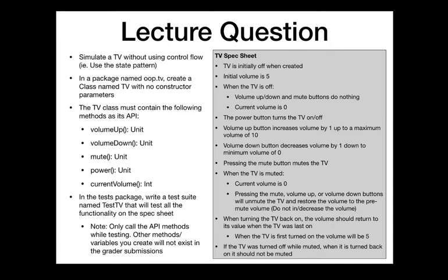A quick overview of the spec sheet: the TV starts off at 'off' with a volume of five. Whenever the TV is off, calling current volume should return zero regardless of the actual volume. When the TV is turned on, the volume is initially five. Volume up and volume down increase and decrease the volume up to a max of ten and a minimum of zero. When you mute, it sets the current volume to zero, but the internal state of the volume has to be remembered. So if you mute while the volume is seven, current volume returns zero, but when you unmute, volume goes back to seven.